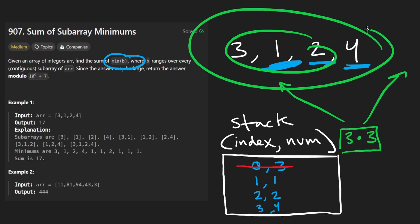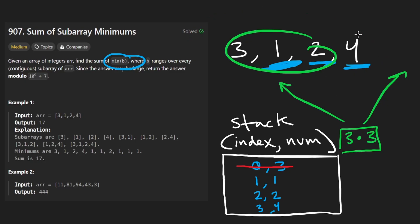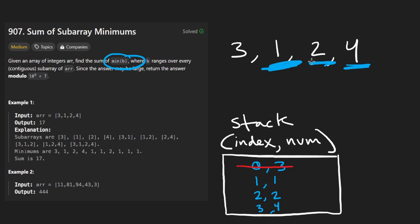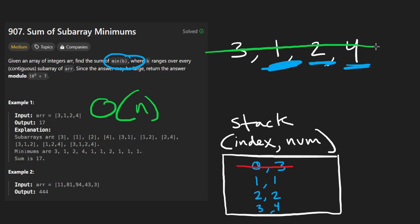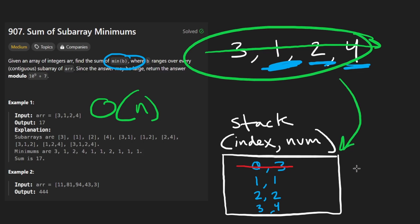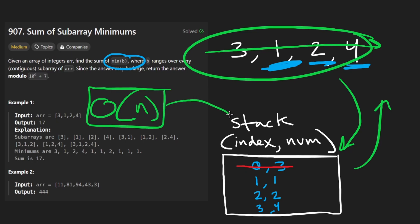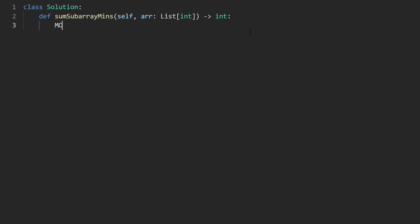The time complexity is O(n) — we iterate over every element, potentially adding and popping it from the stack once. Space complexity is also O(n) for the stack.